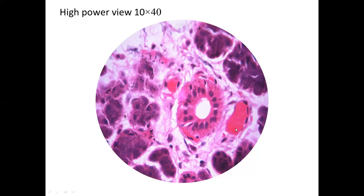Here you see a duct, a blood vessel, acini, and collagen fibers at magnification 10x40. In the high power view of the salivary gland, the duct shows pink-stained cytoplasm with nicely rounded purple-stained nuclei and a clear lumen. The acini now show clearly visible central darkly stained nuclei and pink cytoplasm — though because of proteinaceous granules inside the cytoplasm, the acinar cells appear darkly stained in purple. You can also see blood vessels with squamous cells and red blood cells inside, and collagen fibers.